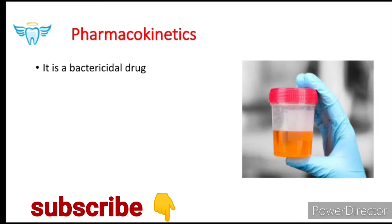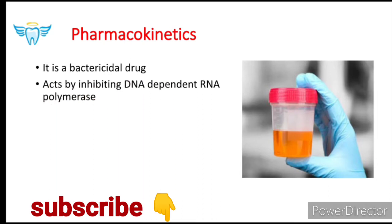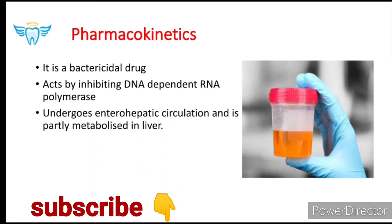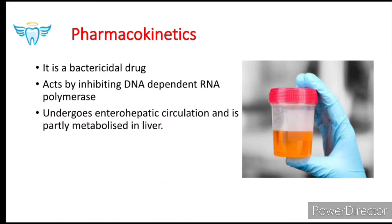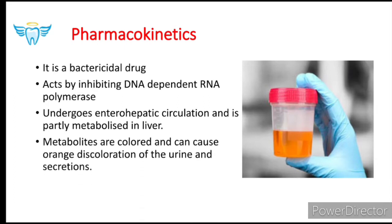In the pharmacokinetics of rifampicin: first of all, rifampicin is a bactericidal drug. It acts by inhibiting DNA-dependent RNA polymerase. Rifampicin undergoes enterohepatic circulation and is partly metabolized in the liver. Its metabolites are colored and can cause orange discoloration of the urine and secretions — this is a peculiarity of rifampicin.